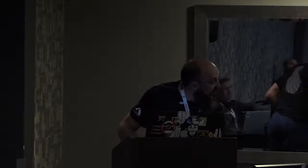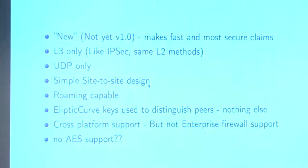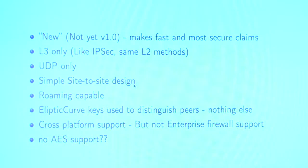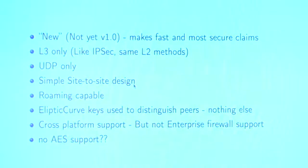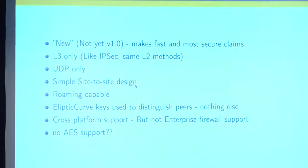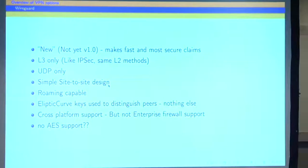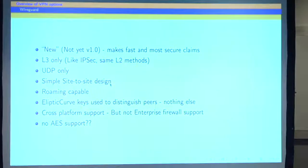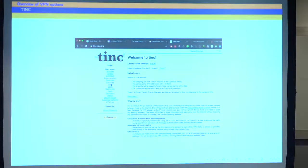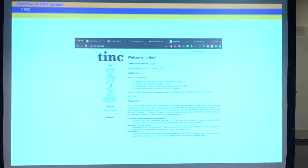The newest kit on the block is WireGuard. My challenges with it: it's not yet version 1, it's layer 3 only so you need to do the same as IPsec to get L2 methods, it's UDP only, and it appears to be a simple site-to-site design. It has roaming capabilities for road warriors but does not have all the other functionality for user authentication. And no AES support - companies and enterprises do want their AES when they don't trust things named elliptic curves yet.